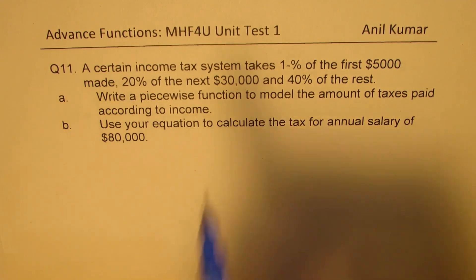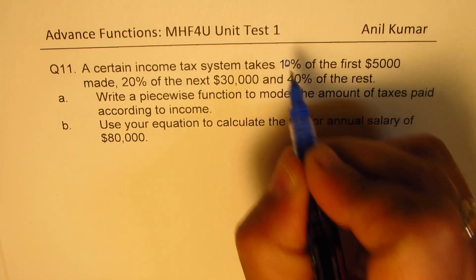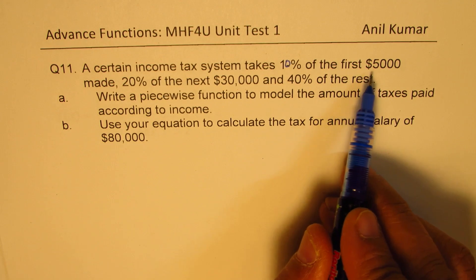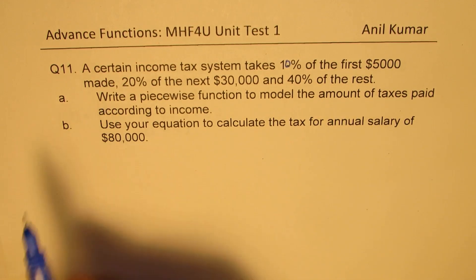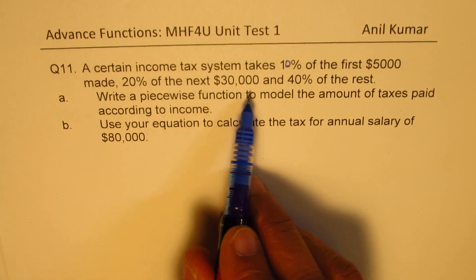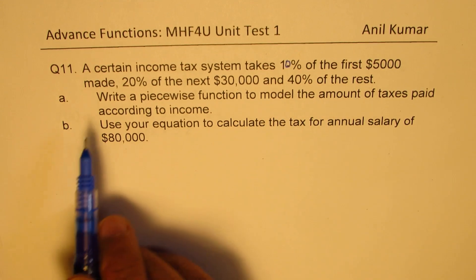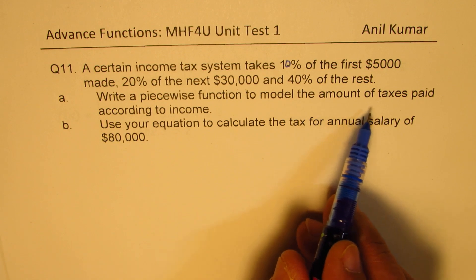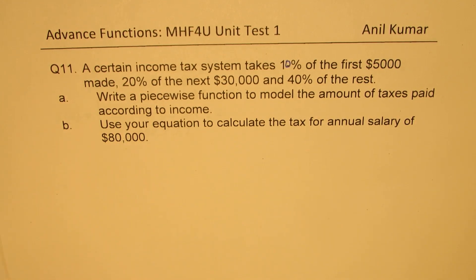A certain income tax system takes 10% of the first $5,000 made, 20% of the next $30,000, and 40% of the rest. Write a piecewise function to model the amount of taxes paid according to the income.